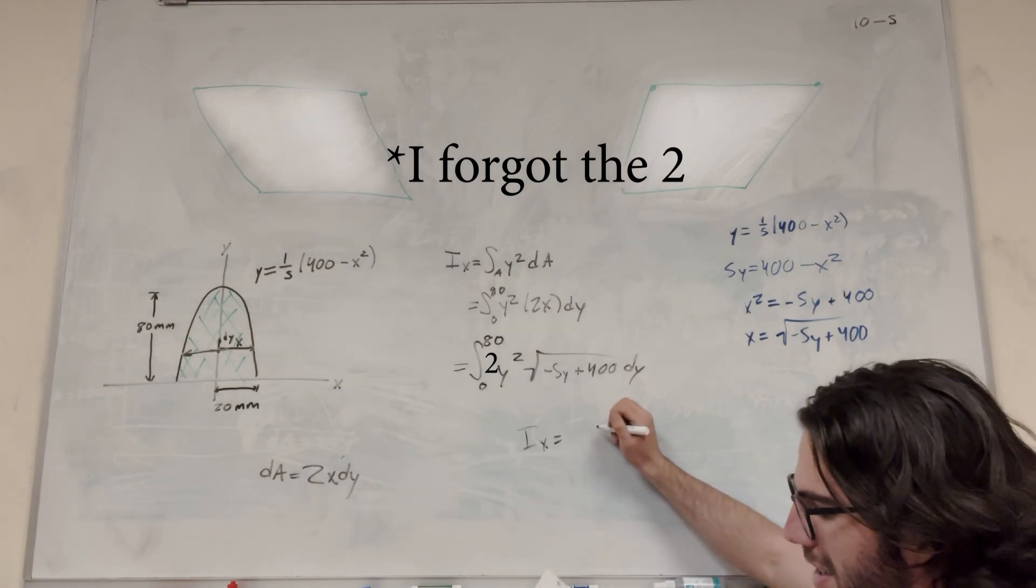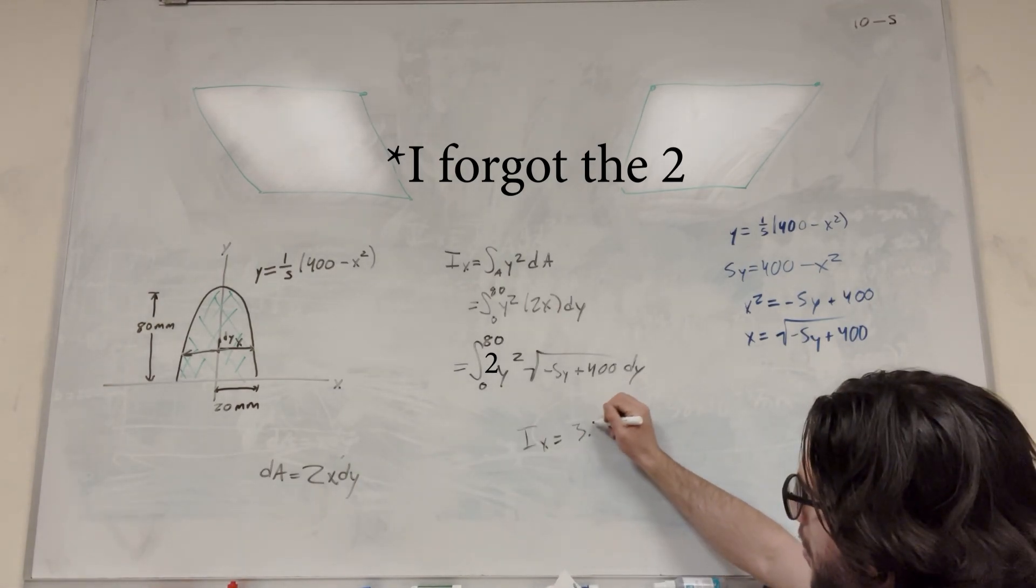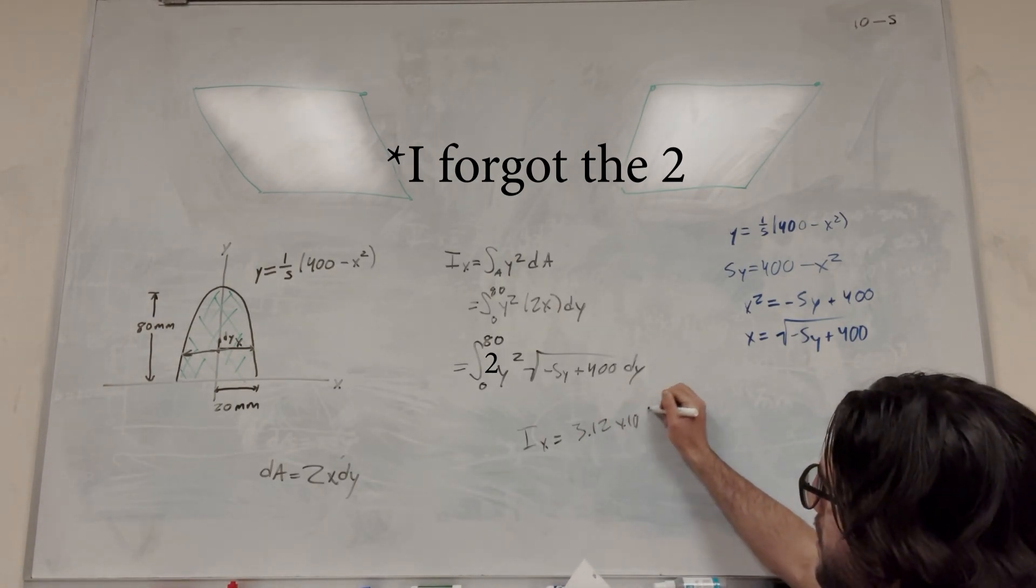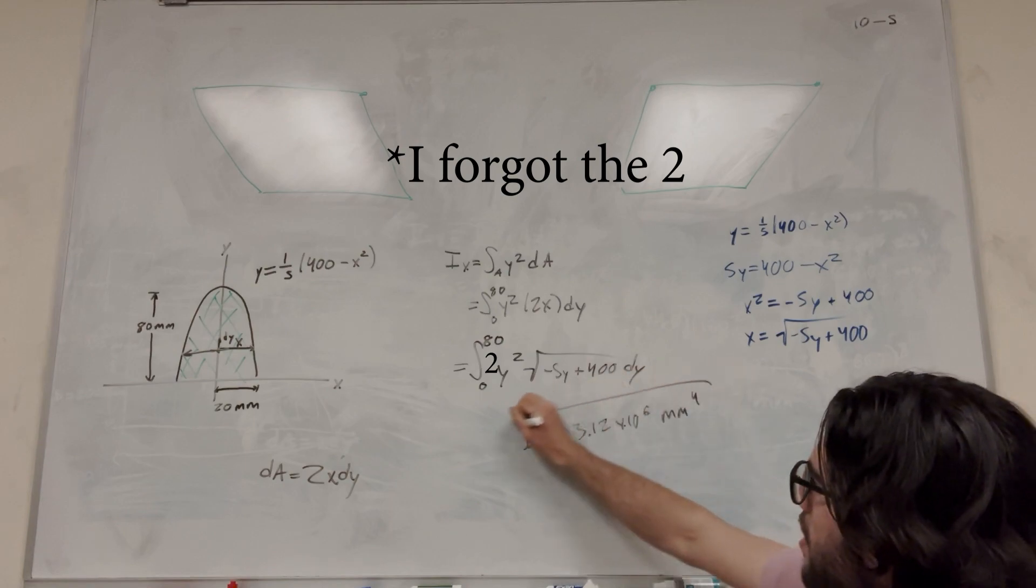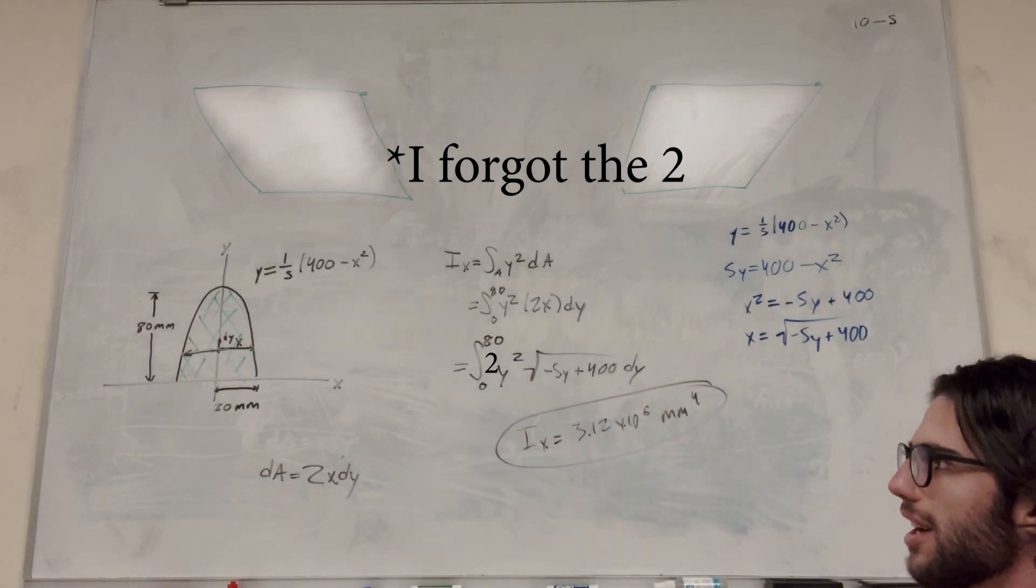...you're going to get I_x equals 3.12 times 10 to the 6 millimeters to the 4th. And that's your answer to the problem right there.